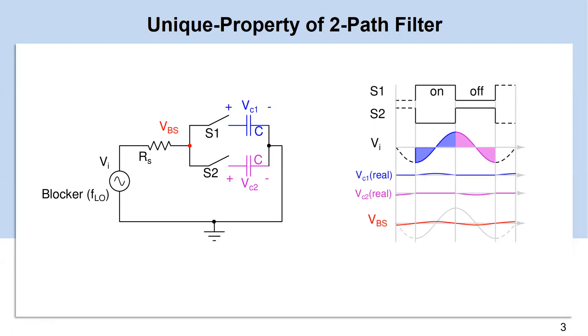However, the voltage across capacitors will have a small ripple during the on-phase of clocks due to finite capacitance.